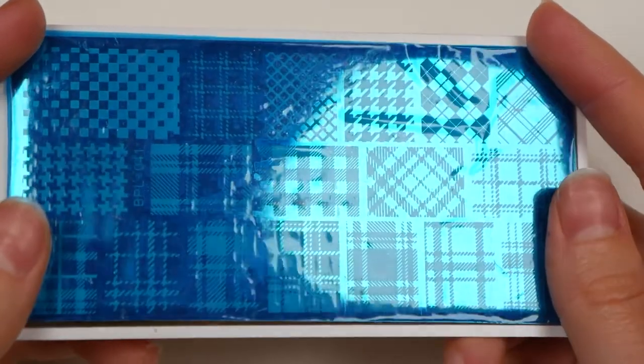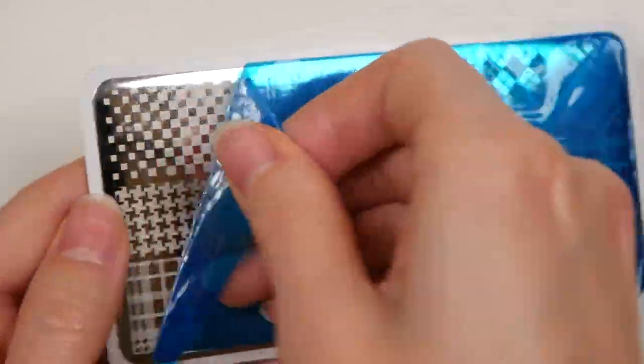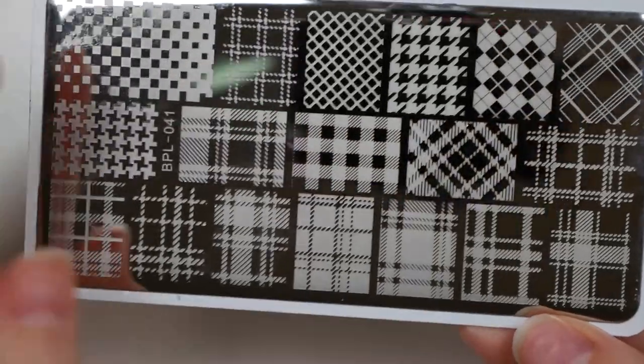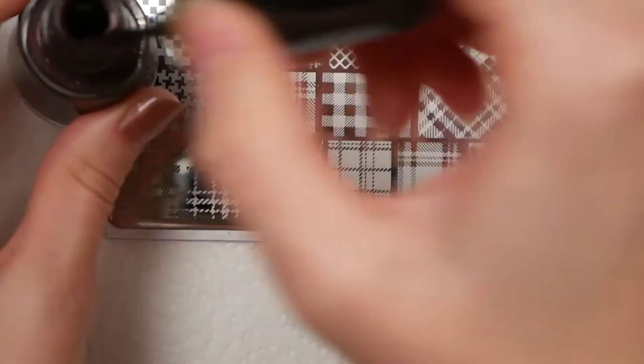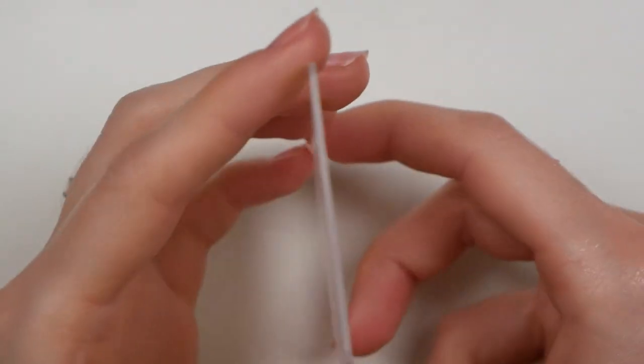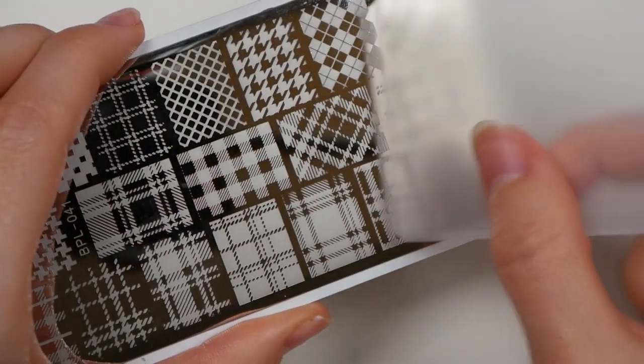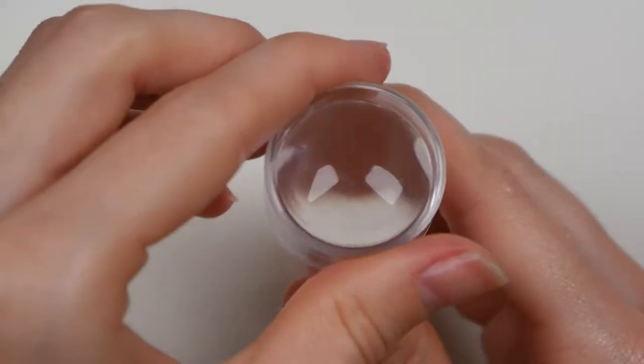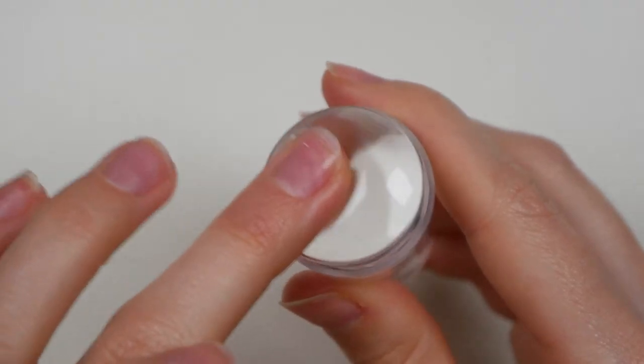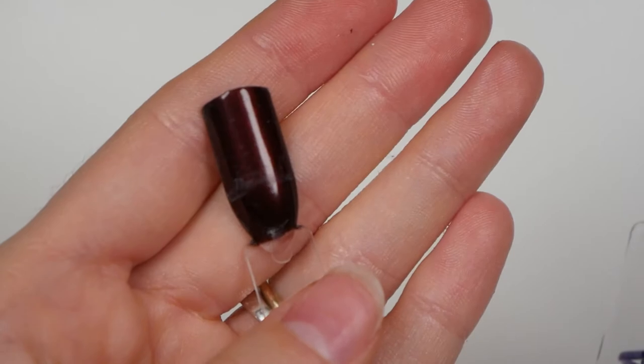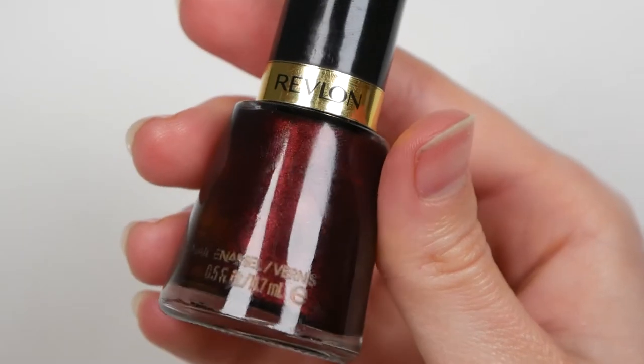Before you start stamping, you'll need to remove the blue protective layer from the plate. I actually first thought that this was just part of the plate, so I tried using it with this layer on, but of course it didn't work that way, so just make sure you remove that. So the way stamping plates work is that you drop some polish on the plate, then you use this scraper to flatten out the polish so it's only going in the crevices, and then you use the stamper to pick up the remaining polish and just stamp it on your nail. So I'll be using this plaid shape right here, and then for the polish, I'll be using this shiny Revlon polish in the color Divine.